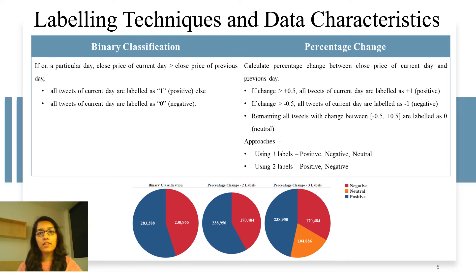The data characteristics using these three techniques are shown in the pie charts. Using binary classification, 55% of the tweets are labeled as positive and 45% of the tweets are labeled as negative. Using percentage change with two labels technique, 58.3% tweets are positive and the remaining are negative. Using percentage change with three labels technique, 46.5% tweets are positive, 33.1% tweets are negative and the remaining are neutral.